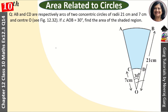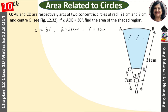We have been given theta = 30 degrees. Two radii are given: the big one is capital R = 21 cm, and the small radius is r = 7 cm. Now we need to find the shaded region's area.